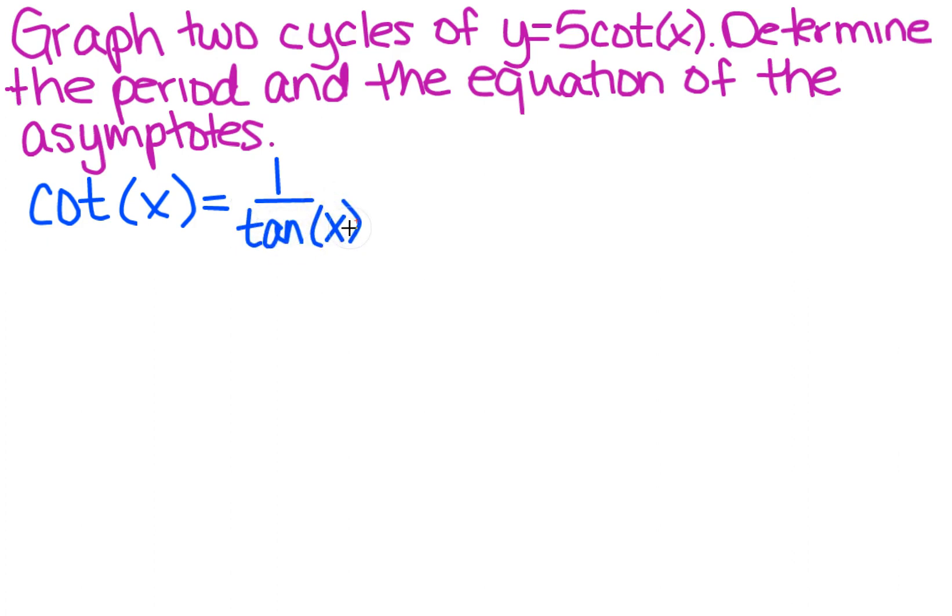So what does that mean? Well, that means we are able to go ahead and graph because we know what that's going to look like. So I have my vertical asymptotes.